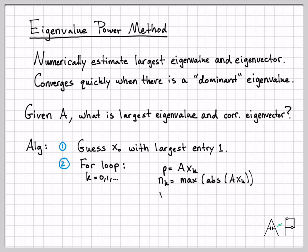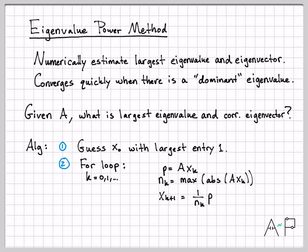Then we use that scalar value to normalize the product, and this gives us our next guess for x. So if you notice, we started with x of k, and by the end of this iteration of the algorithm we have x of k plus 1. We can just complete this whole loop over and over as many times as we want.